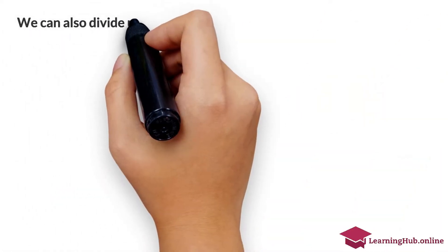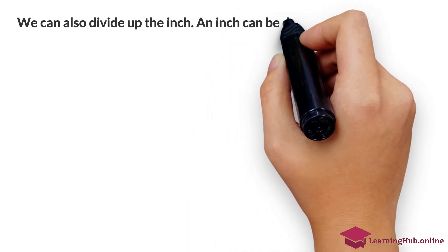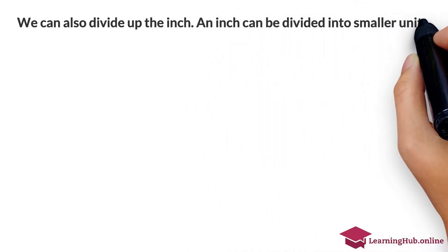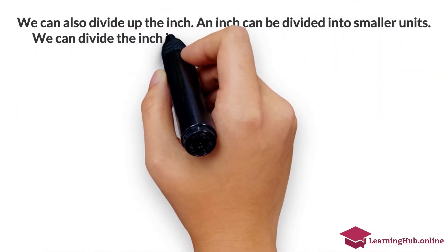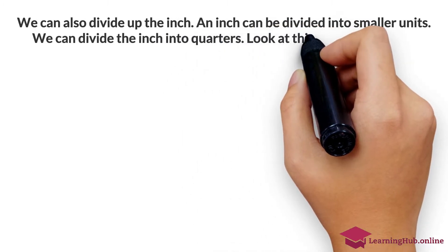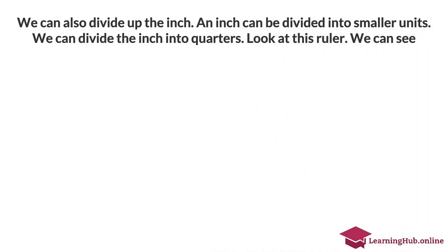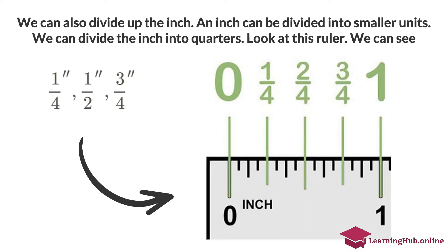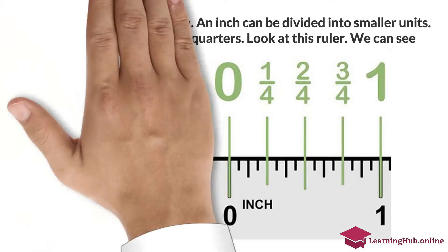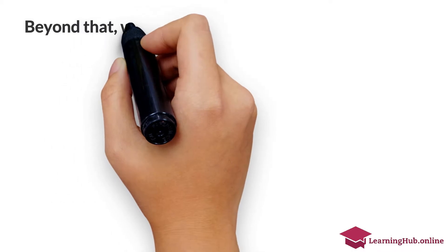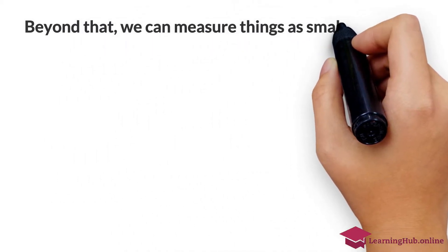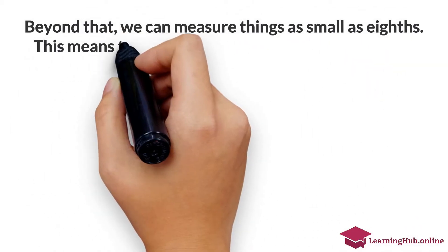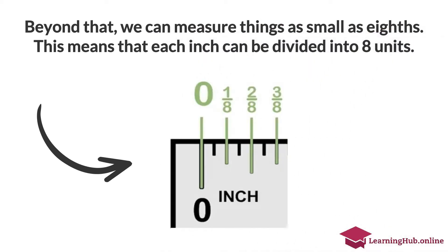We can also divide up the inch into smaller units. We can divide the inch into quarters. Look at this ruler — we can see 1 quarter inch, 1 half inch, and 3 quarters inch. Beyond that, we can measure things as small as eighths. This means that each inch can be divided into 8 units.